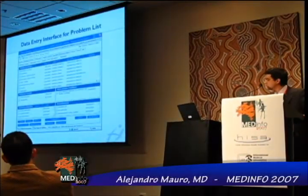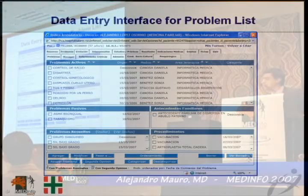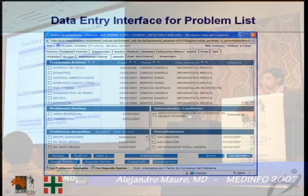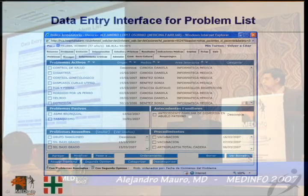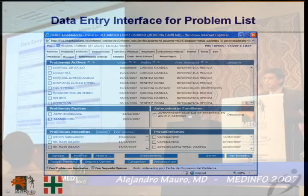This is a screen capture of our electronic health record — the Opatient electronic health record. Here you can see the problem list screen, where physicians and nurses can add problems to the electronic health record.